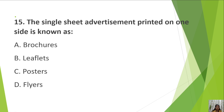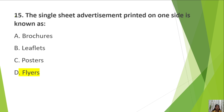Next: the single sheet advertisement printed on one side is known as A. Brochures, B. Flats, C. Posters, D. Flyers. The answer is flyers. Brochures and leaflets have more than one sheet. Posters have one sheet but are not generally a part of advertising. The correct answer for a single sheet advertisement printed on one side is flyers.